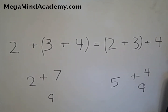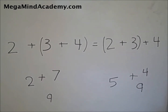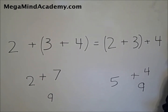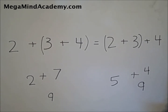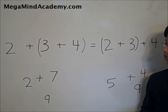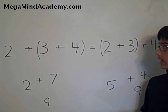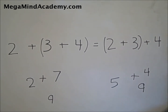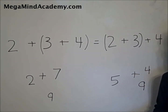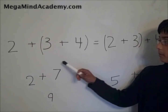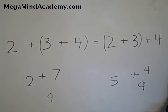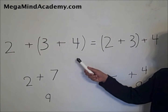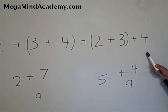This is an example of the associative property in addition because the sums remain the same regardless of their grouping. You can see that the grouping changed from three plus four to two plus three. Also note that the numbers were the same in both equations: two plus three plus four.